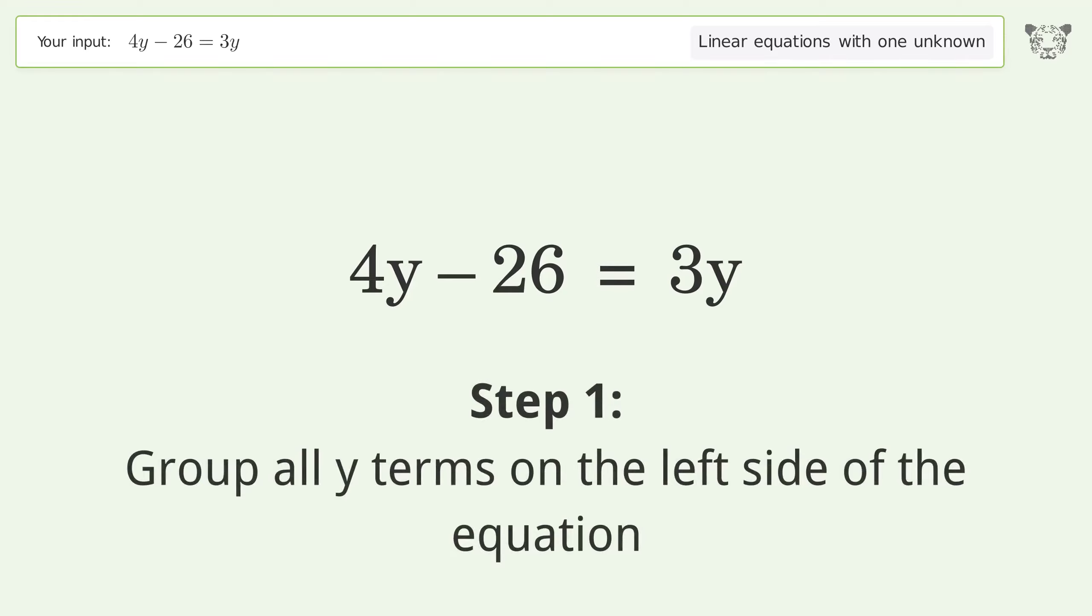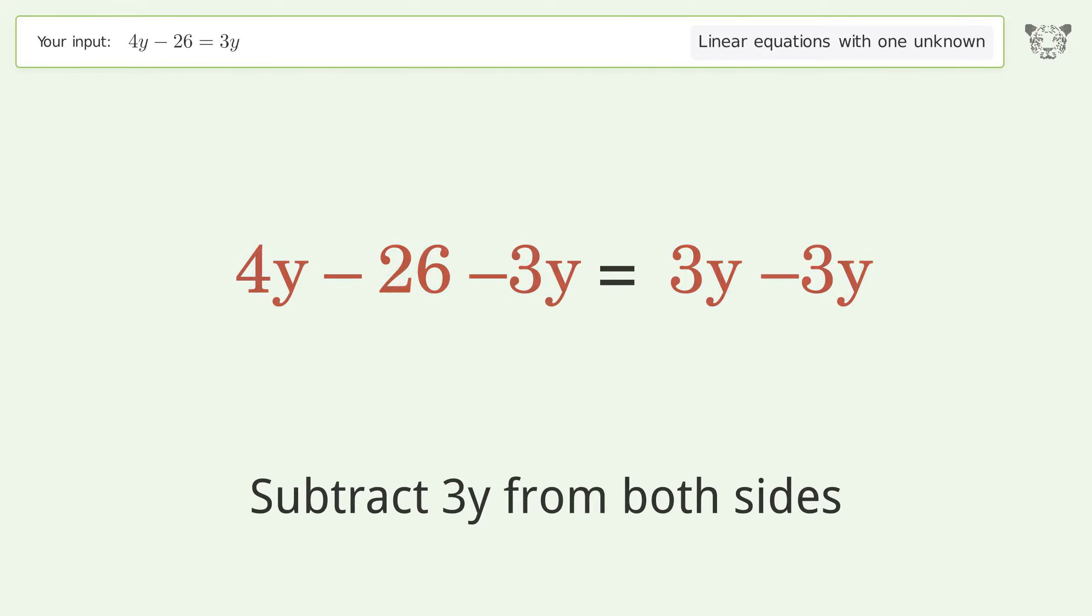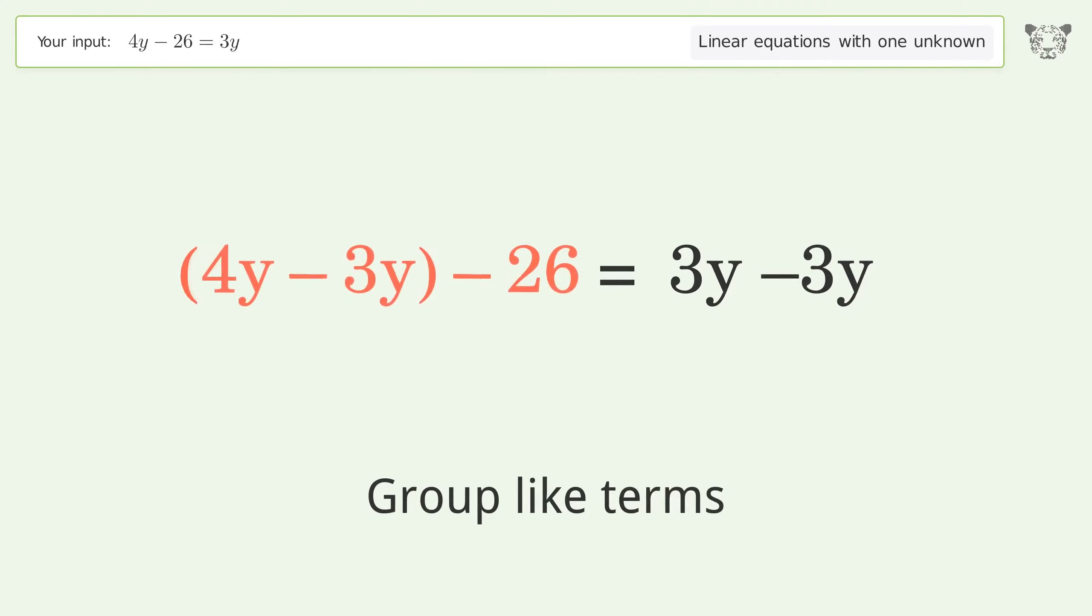Group all y terms on the left side of the equation. Subtract 3y from both sides. Group like terms. Simplify the arithmetic.